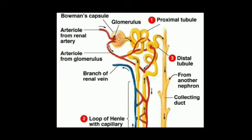This Bowman's capsule is attached with a U-shaped tubule where selective absorption of substances takes place. Here, selective absorption means there are various substances in the blood of human beings that can be used by our body, like glucose, some quantity of salt and amino acids.